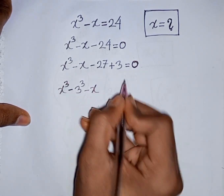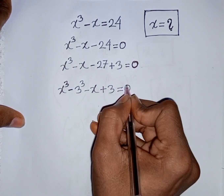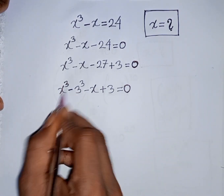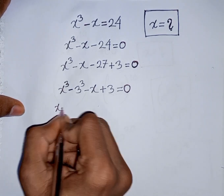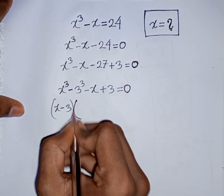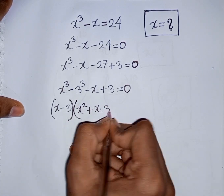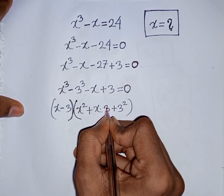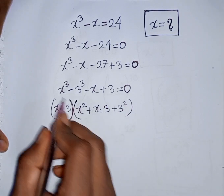Then minus x plus 3 is equal to 0. Now here you can apply the formula of a³ minus b³, where a is x and b is 3. According to the formula, you can write: (x minus 3)(x² + x·3 + 3²). That means (a minus b)(a² + ab + b²) — this is the formula of a³ minus b³.